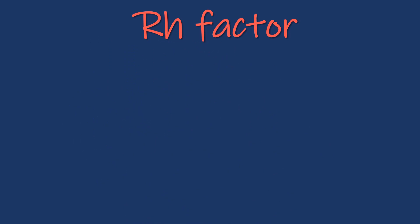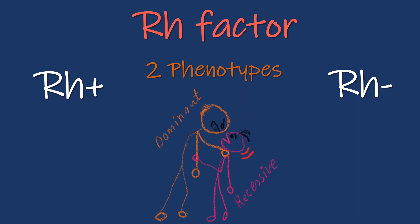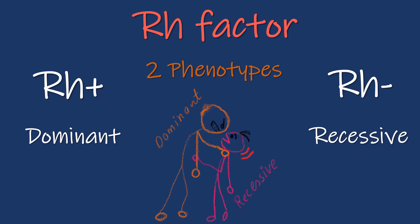Let us now consider problems involving the Rh factor. The Rh factor has two phenotypes: Rh positive and Rh negative. Rh positive is dominant and Rh negative is recessive. There are two possible genotypes for Rh positive: (+/+) and (+/−), while Rh negative has only one possible genotype: (−/−).